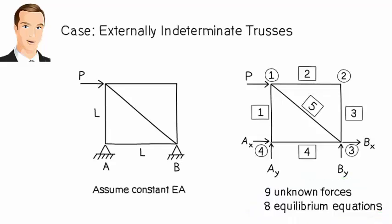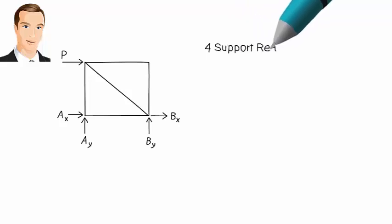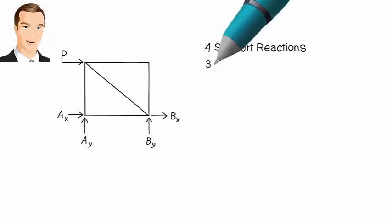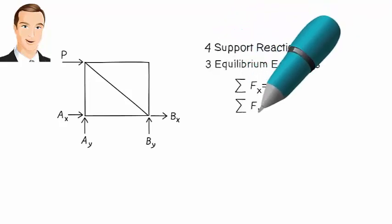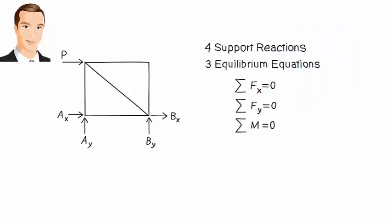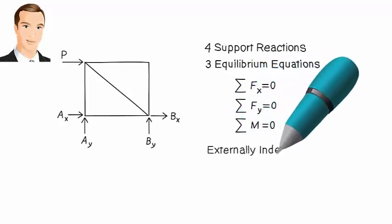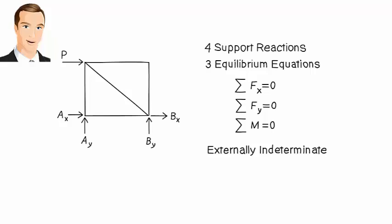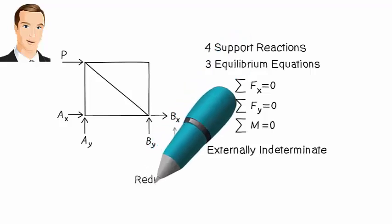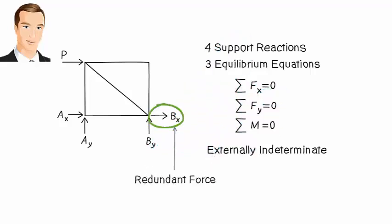How do we know the indeterminacy is external? The truss has 4 support reactions. In order to calculate them without calculating any of the member forces, we need 4 equilibrium equations. But using the free body diagram of the entire truss, we can write only 3 equilibrium equations. This means we do not have enough equations to directly determine the reactions, making the truss externally indeterminate. Therefore, to analyze the truss using the force method, we need to select one of the support reactions as a redundant force. I am going to pick the horizontal reaction at B as the redundant force, referred to as Bx.